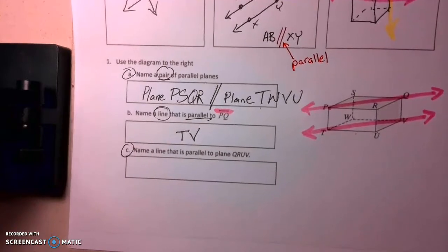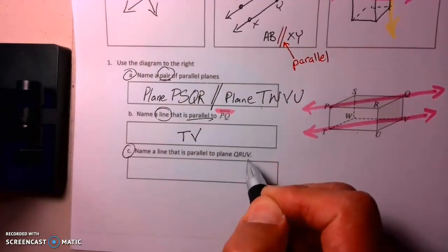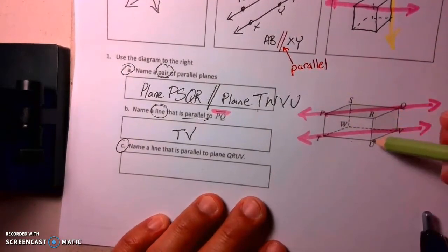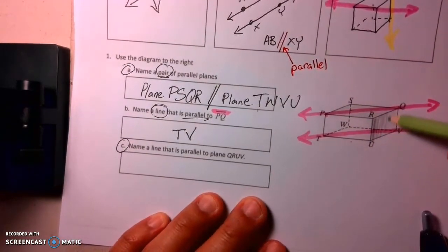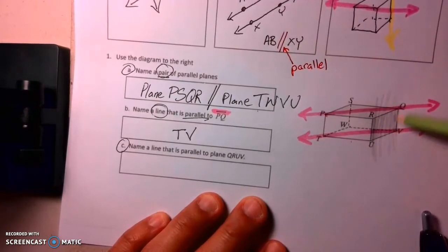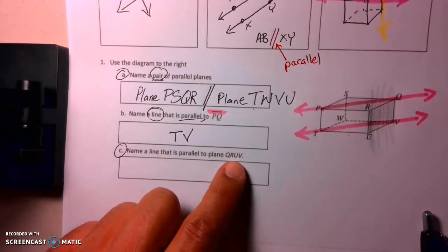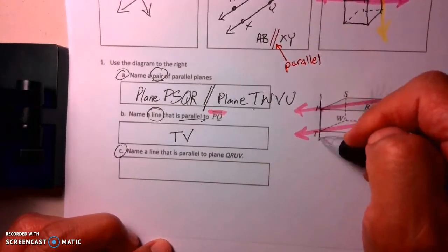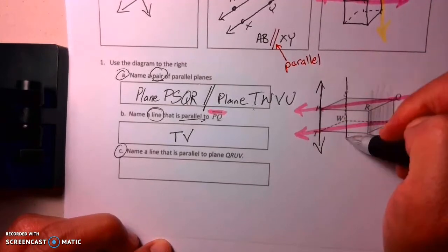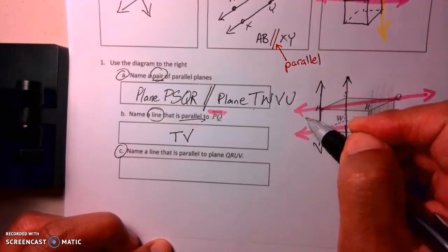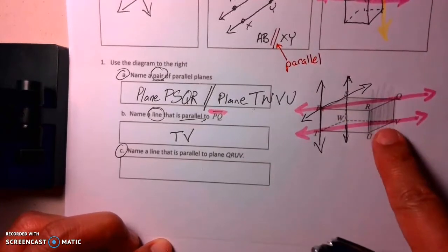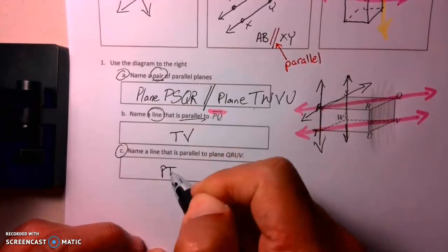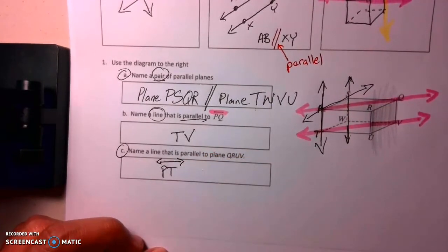Letter C, name a line that is parallel to plane QRUV. So where's plane QURV? Well that's this one here to the right. QURV. So it's this one here to the right. So there's going to be more than one answer here. I'm just going to shade it. Remember, these planes can go on forever up and to the right. And you could choose a bunch of lines here. You could choose this one here, PT. You could choose this one in the background, SW, maybe you want PS, any of these guys will work. It's not going to hit this plane here on the right. I'm just going to pick PT. But there is more than one answer for this particular one, okay?